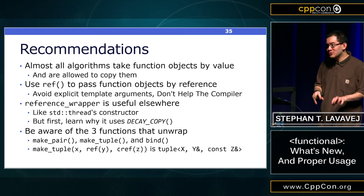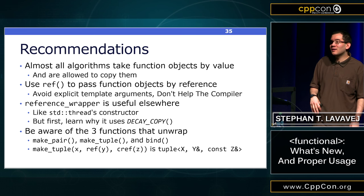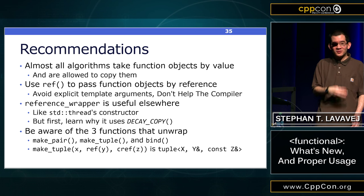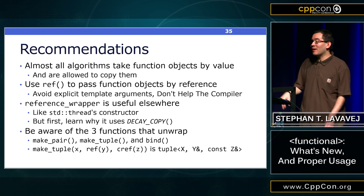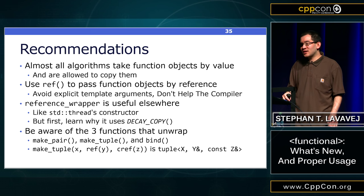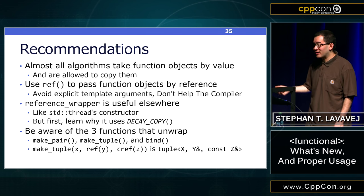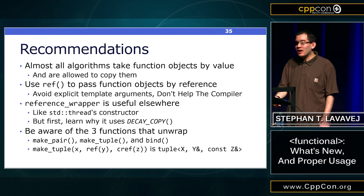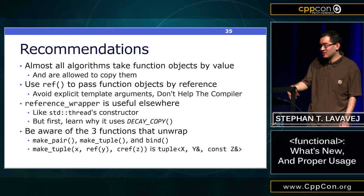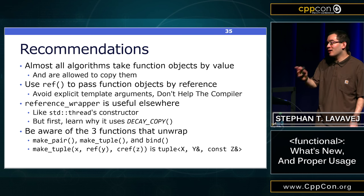Because C++98/03 algorithms almost all take function objects by value and are allowed to copy them, if you don't want copying you can and should use std::ref to ask the STL to pass by reference inside a reference_wrapper. Some people try to use explicit template arguments to make an STL algorithm take a function object by reference, but that's not portable. Also, reference_wrapper is unwrapped by a few functions in the STL — notably make_pair and make_tuple — so if you give them reference wrappers, they return a pair or tuple with built-in references.